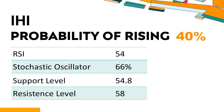The current stochastic oscillator of IHI is 66%. When the stochastic oscillator stays between 50 and 80, it may indicate that the stock is experiencing a mild downtrend with some selling pressure. In this case, an oversold signal could indicate that a stock is reaching a potential buying opportunity.